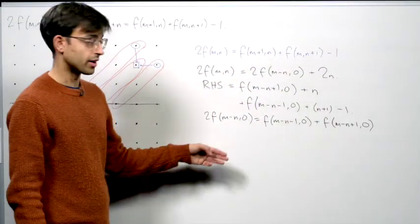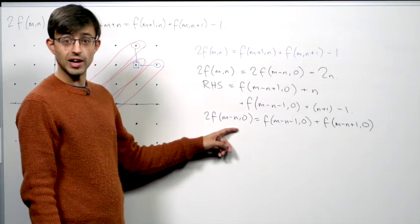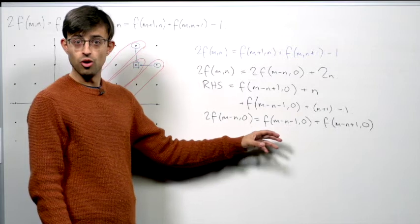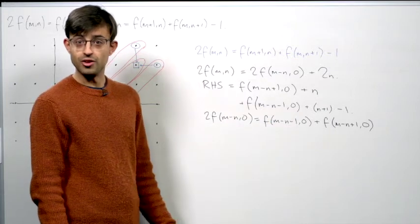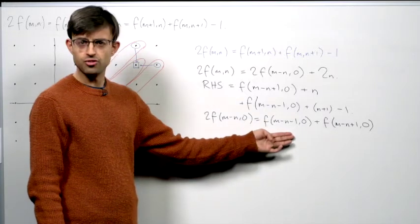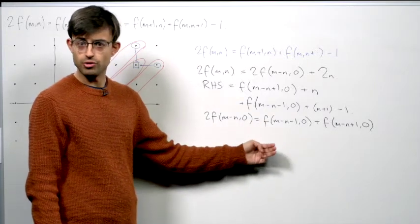We get the following, which says that one value of f on the x-axis is equal to the average of the two adjacent values of f on the x-axis. This notation is a little bit clumsy, so let's try and rewrite it slightly.